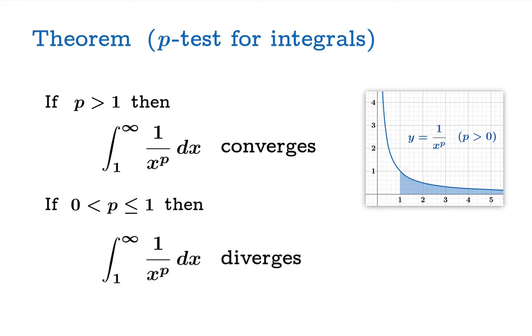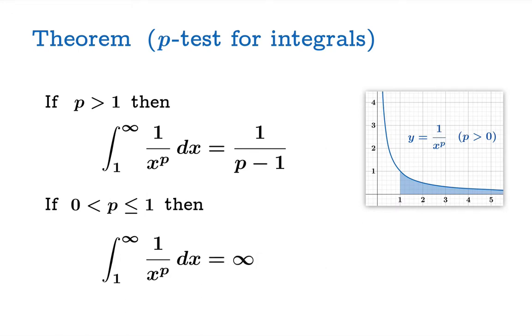In the proof, it's going to work out that we can say more than this. In fact, we can assert that this integral will converge to the value 1 over p minus 1. And the divergence is actually quite specific — it actually diverges to infinity.